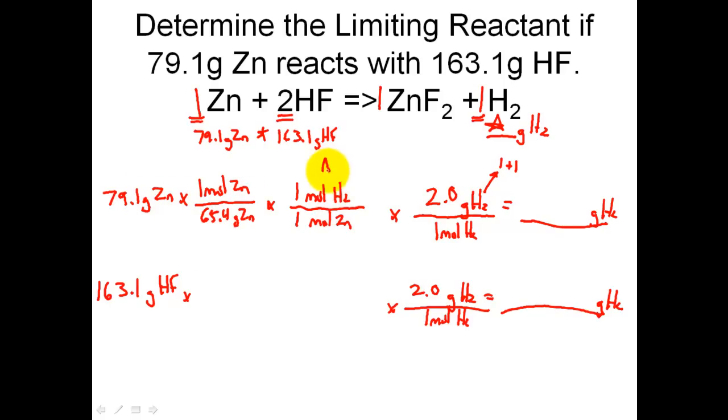This is our key step here. We convert from zinc into hydrogen. Mole of hydrogen on top will cancel out with mole of hydrogen down the bottom. And lastly, grams of H2 will match grams of H2. So when I plug this in and I calculate it, I find out that 2.42 grams of H2 will be produced by 79.1 grams of zinc.